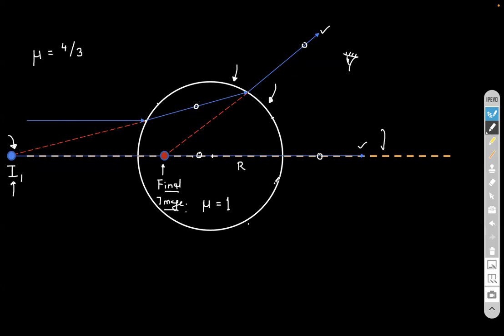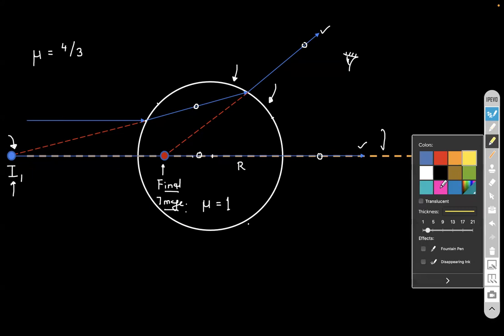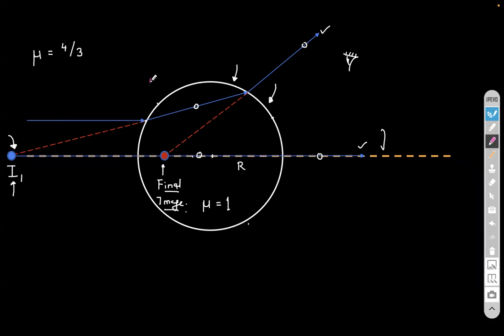So once we understand the ray diagram like this, it becomes very easy to solve problem. And just one more thing. When you solve a question like this, you need to be very careful with respect to from where you're measuring the distances. So when you're talking about refraction from this interface, you measure all the distance from this optical center, this one. O1, let us say. And when you're talking about this interface, this spherical interface, for that, the second refraction, you have to measure the distances from here. So I hope you got to learn something new today. Thanks for watching.